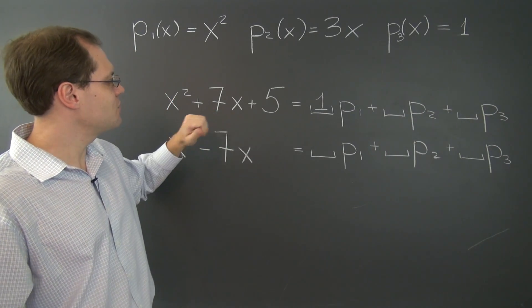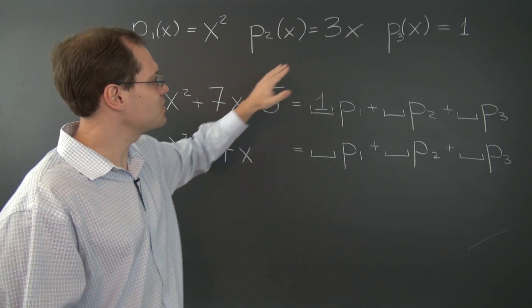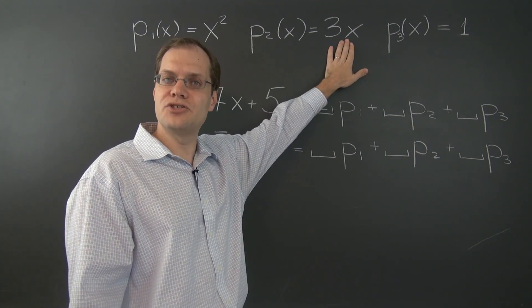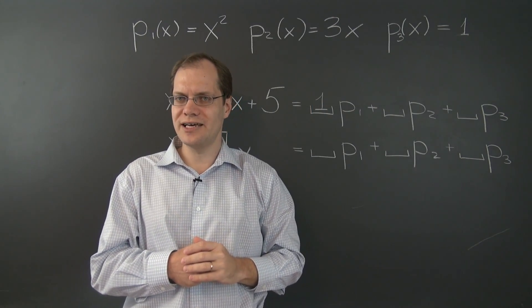Now, we're dealing with 7x. And the only place where x can come from is this polynomial right here, p2.